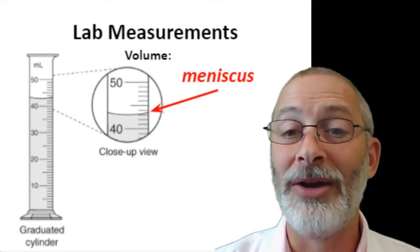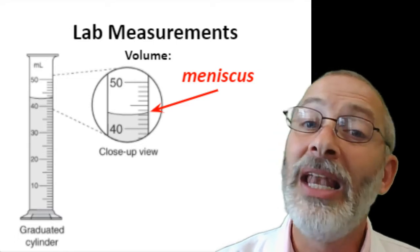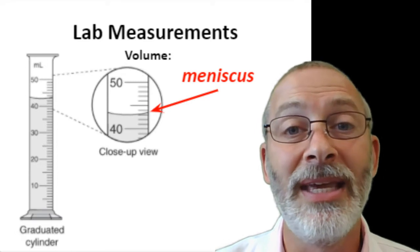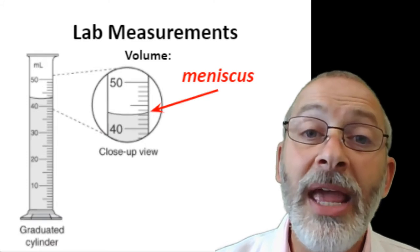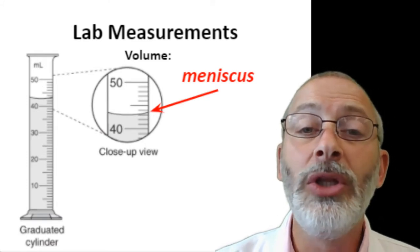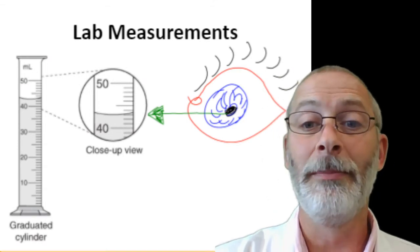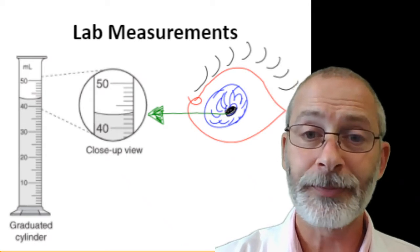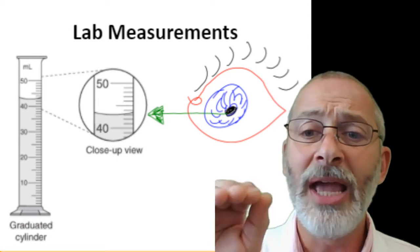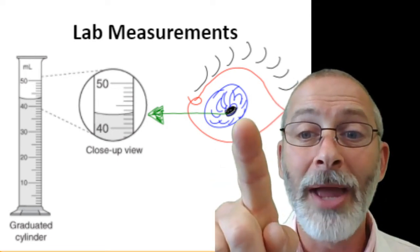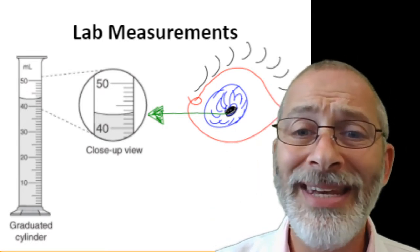We call that little curve or smiley face a meniscus. Label the diagram in your book and label that line 'meniscus.' When you read the volume of a liquid in a graduate, you always want to look at the bottom of the meniscus — that curve. You look at the bottom of the smiley face, and you want to line up your eyeball so that it is level with the bottom of the meniscus.